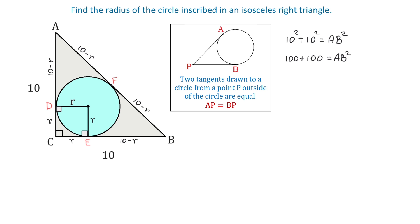Then 200 equals AB squared. Then AB equals square root of 200. And we can simplify square root of 200 by writing it as a product of 100 times 2. Then because square root of 100 is 10, AB equals 10 square root of 2.